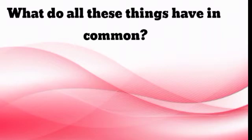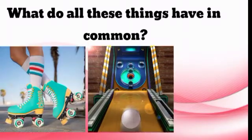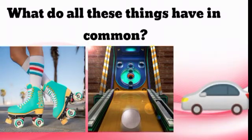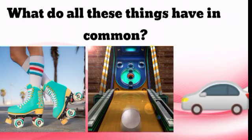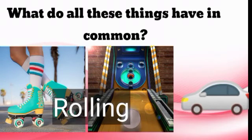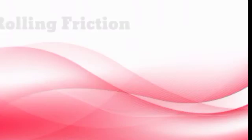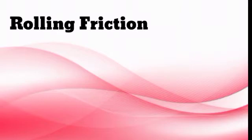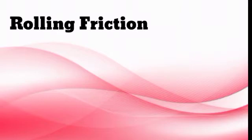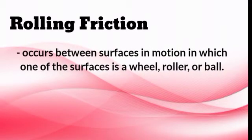What do all these things have in common? They are all rolling. Let us discuss the first type of friction, which is rolling friction. Rolling friction is friction that occurs between surfaces in motion, in which one of the surfaces is a wheel, roller, or a ball.